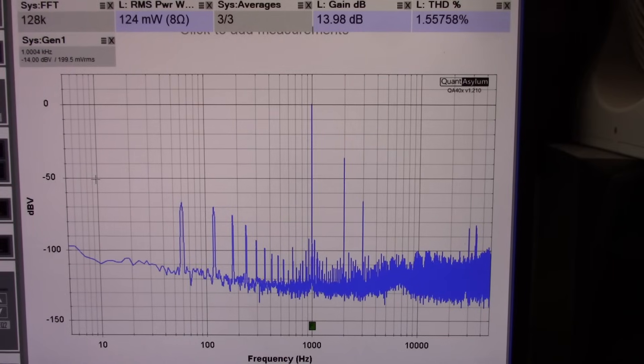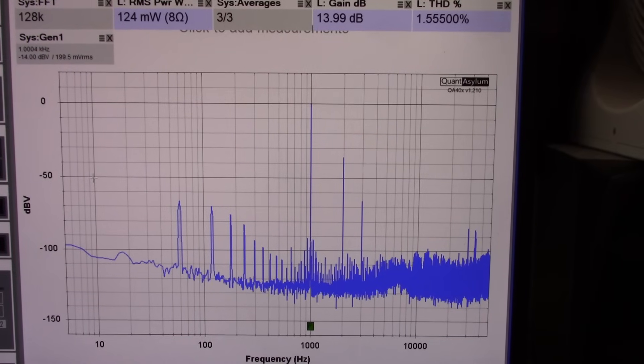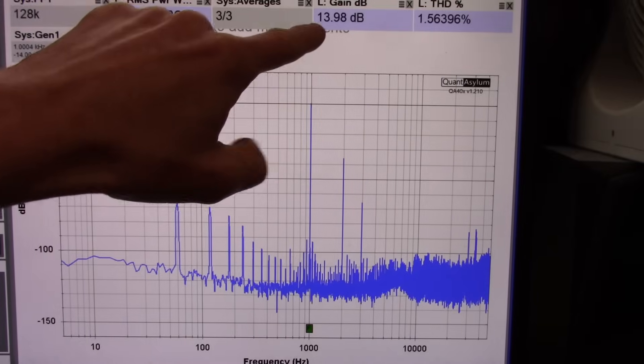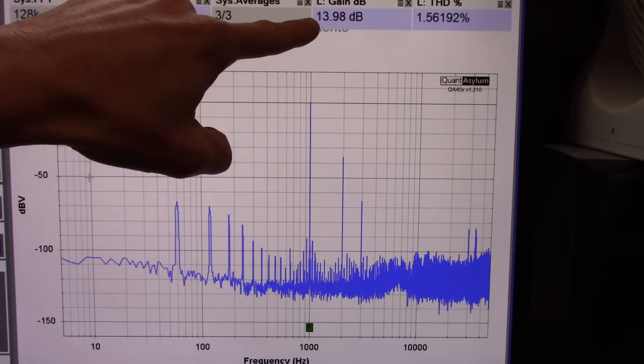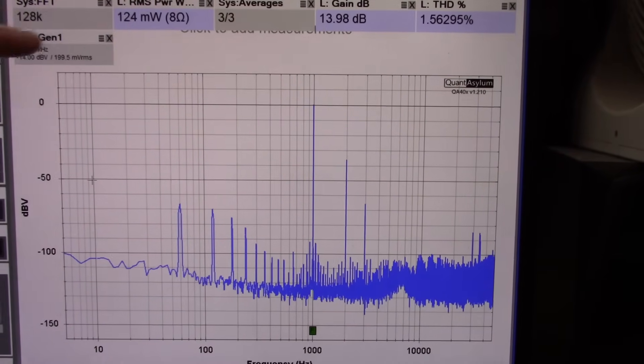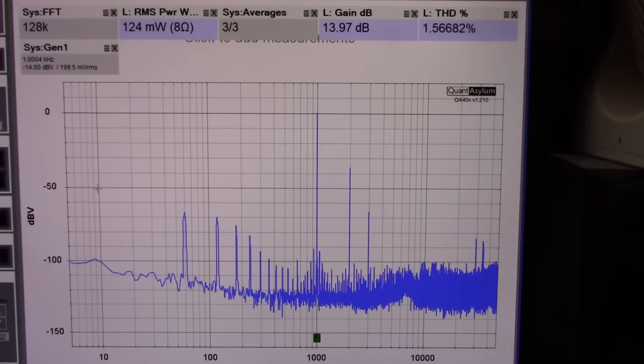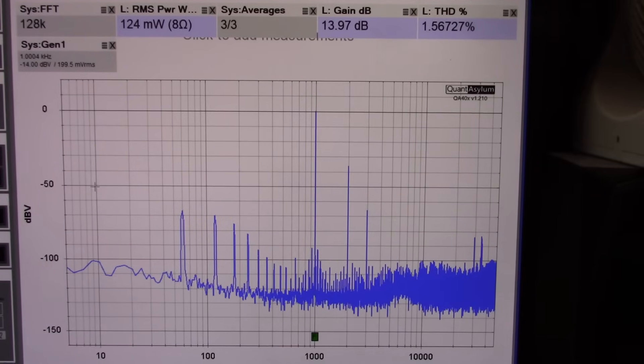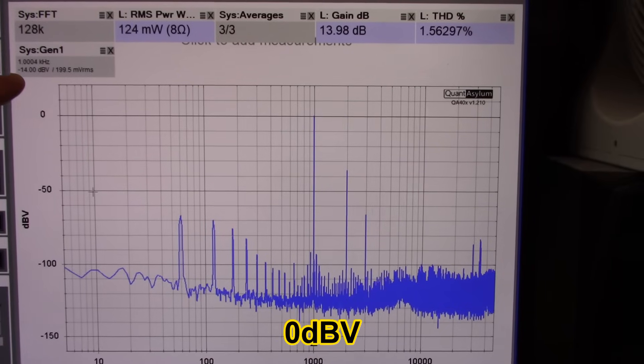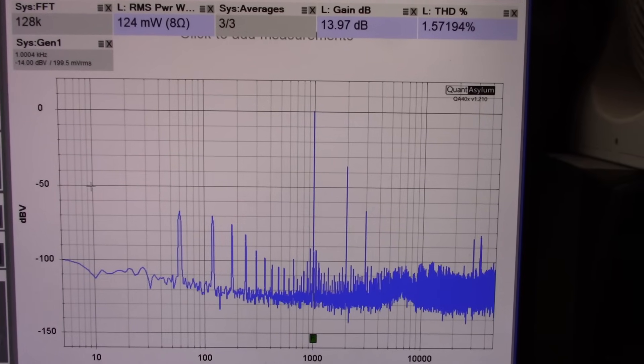I went ahead and added the 10k load to the preamps output. Because I needed to get the reference point anyway for my other measurements. And you can see the gain decreased to about 14 dB. And I know my settings are correct. Because to get that 0 dB output, which is 1 volt, I have to put minus 14 in. So I know my settings are correct.